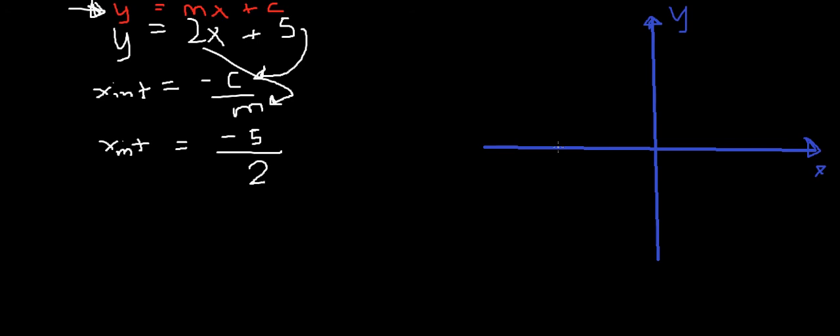The x-intercept is minus 5 over 2, so here we are. And the y-intercept was 5, which is up here. And then that's our line: y equals 2x plus 5.